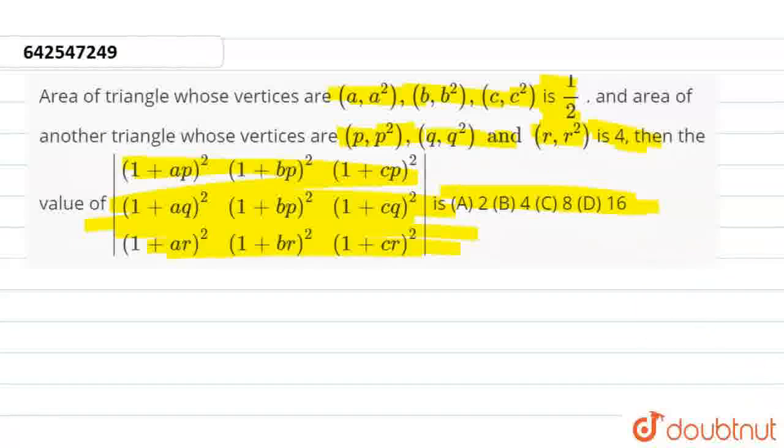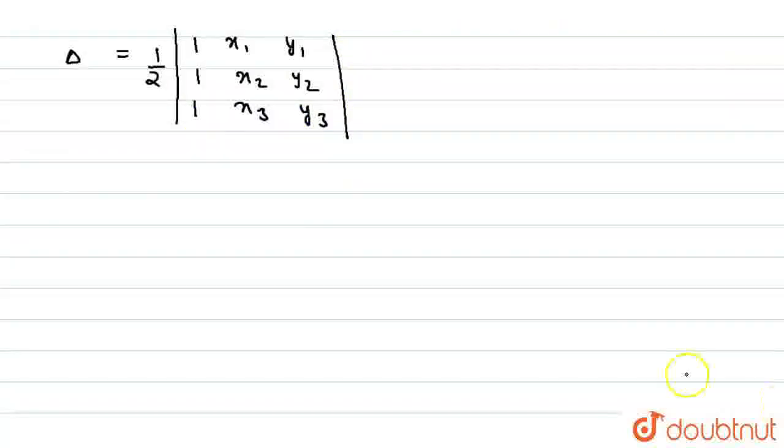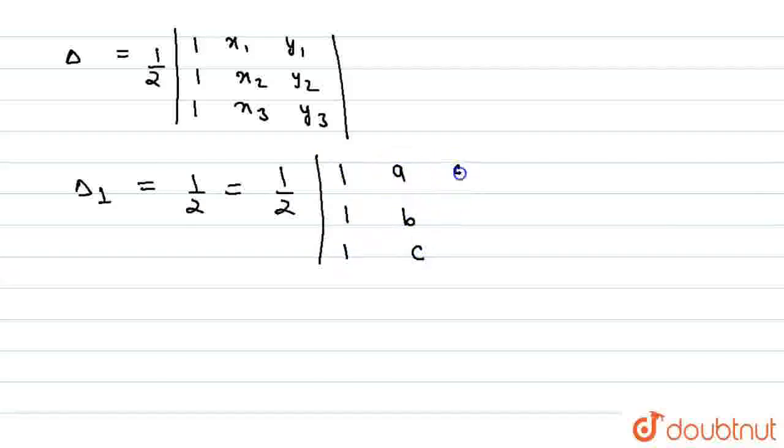Now to solve this question, first of all we write the area of triangle which is given by 1/2. If 3 vertices are there then determinant: 1, 1, 1, x₁, y₁, x₂, y₂, and x₃, y₃. So for the given two triangles, for the first triangle, Δ₁ = 1/2 = 1/2 of determinant: 1, 1, 1, a, b, c, a², b², and c².